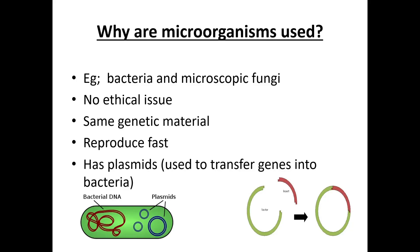Microorganisms used can be bacteria or microscopic fungi. They have no ethical issues, they have the same genetic material, they reproduce very fast, and they have plasmids used to transfer genes into bacteria. They have a rapid reproduction rate, can make more complex molecules, and the genetic code is shared with other organisms.